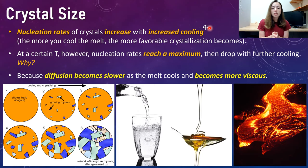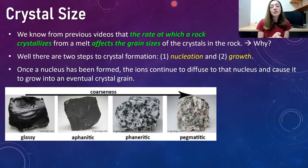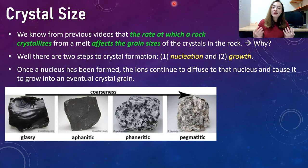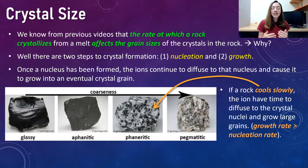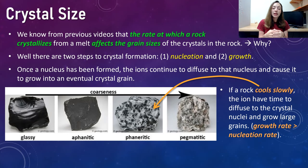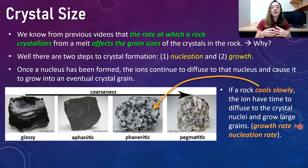The rate at which a rock crystallizes from a melt affects the grain sizes of the crystals in that rock. If a melt cools really slowly and forms a rock, the ions will have time to diffuse to the crystal nuclei formed during nucleation and grow very large grains, because you're giving those ions time to move and diffuse through that material in order to get to those nuclei and grow. That scenario is one in which growth rate is greater than nucleation rate — you have nucleation, but the growth of those nuclei occurs at a greater rate, giving you very large crystals and fewer grains overall.